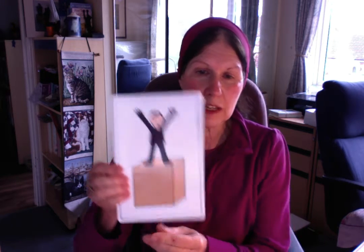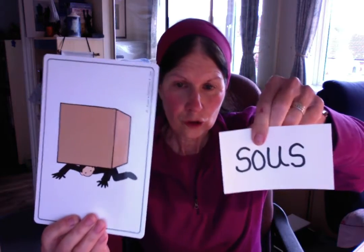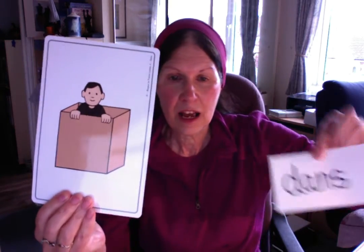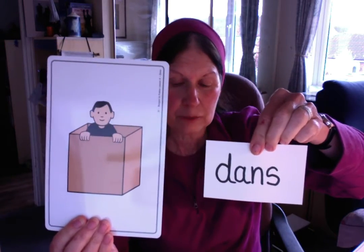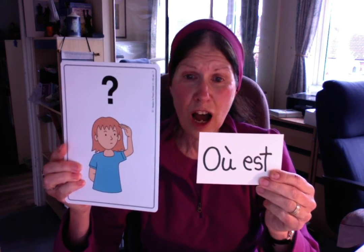Before we look at the sketch, we're going to look at positions where my cat could be. It could be 'sur' — on something. It could be 'sous' — under something. It could be 'dans' — inside something. Now if I look at my sketch: 'Où est mon chat?' And the sketch continues.